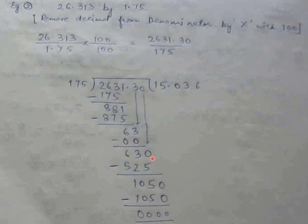Now I will copy the last digit that is 0. So 63 became 630, and 175 threes are 525. On subtracting we got 105. Since we have a decimal in the quotient area we can add a 0 here. So 1050, it will go 175 six are 1050. What is left is 00. So the answer is 15.036. And to check you can multiply your quotient and your divisor.